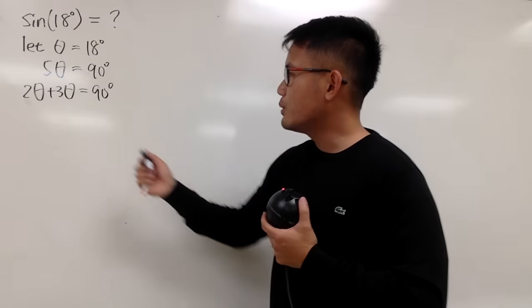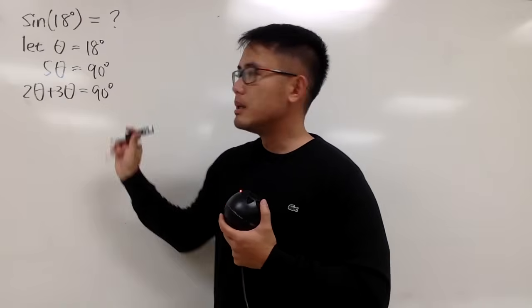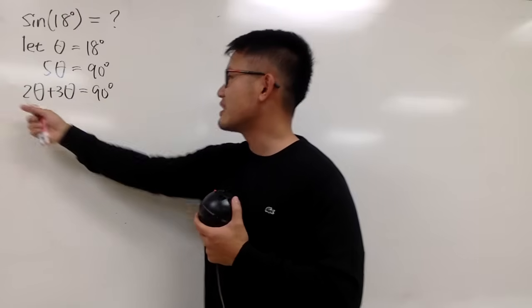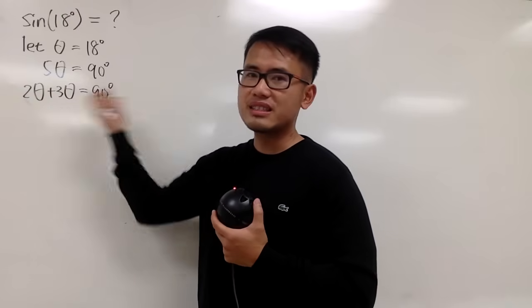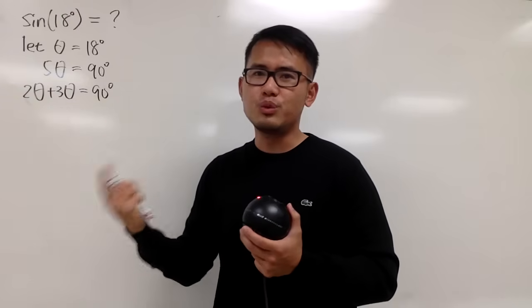I want to take sine on both sides, but if I do sine of both sides, then that's sine of 2 theta plus 3 theta, that's equal to sine of 90 degrees, that's equal to 1.